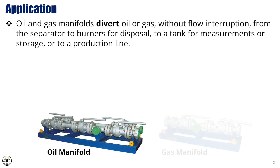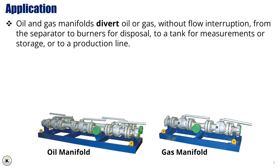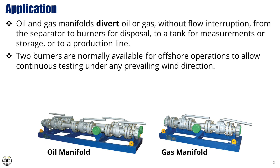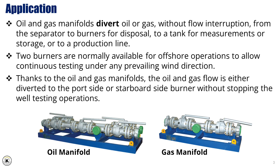Oil and gas manifolds divert oil or gas, without flow interruption, from the separator to burners for disposal, to a tank for measurements or storage, or to a production line. Two burners are normally available for offshore operations, allowing continuous testing under any prevailing wind direction. Thanks to the oil and gas manifolds, the oil and gas flow is either diverted to the port side or starboard side burner, without stopping the well testing operations.